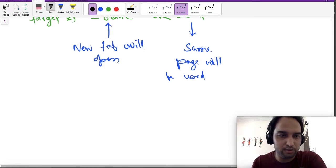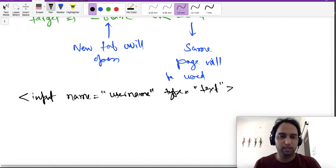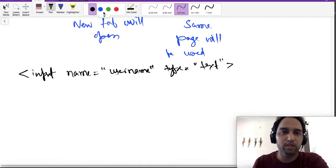In forms, we have seen that there is an input element with a name attribute along with it, which might say username as we have seen in our first element, and then there is type equal to text. So what does this name attribute mean?